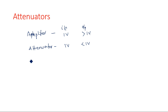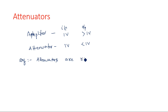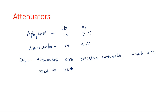An attenuator is nothing but a pure resistive network which is used to reduce the amplitude of the input signal. The definition: attenuators are resistive networks which are used to reduce the amplitude of the input signal.